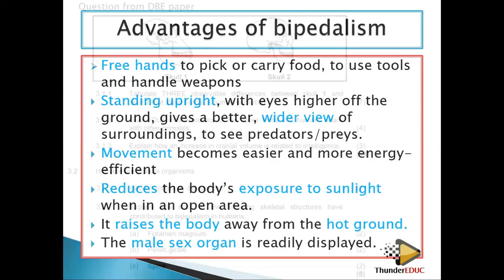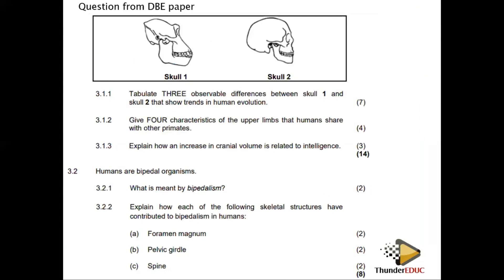Let's try to understand these points with some exam questions. Number one: the observable difference between skull one and skull two. What do you see? We can observe that the brow ridges — brow ridges — are more pronounced in one skull and less pronounced in the other.